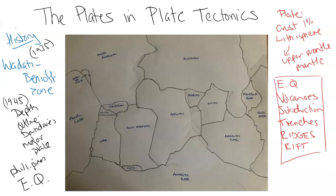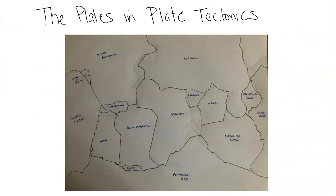We started to get this understanding of where the plates are based on earthquakes. The volcanoes also helped, though they were a couple of hundred kilometers away from the actual boundary. From the 1950s and 60s, with growing technology and the application of satellites, GPS, navigation, and military tech for science, we identified roughly 52 plates in general — large ones and small ones — by 2003.